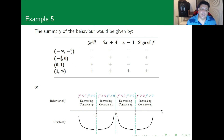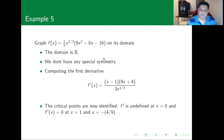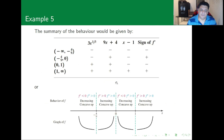The three critical points are x = -4/9, x = 0, and x = 1. We analyze the sign of f' over the intervals (-∞, -4/9), (-4/9, 0), (0, 1), and (1, ∞) to classify behavior.